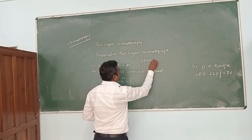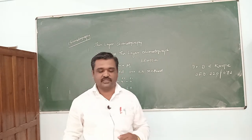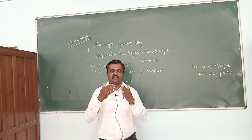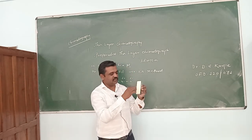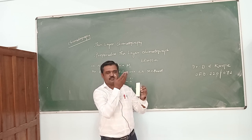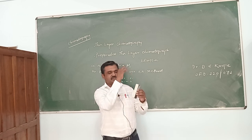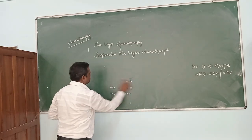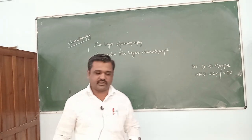How does separation take place? The separation takes place according to adsorption-desorption behavior. The components get adsorbed on the surface of the stationary phase. When the mobile phase passes — suppose this is the stationary phase and we dip it into the chamber — at that time, the solvent starts moving upward according to capillary action principle. Therefore, the separation of the components takes place according to adsorption-desorption behavior. This is the actual principle of thin layer chromatography, and it is useful for the separation of organic components.